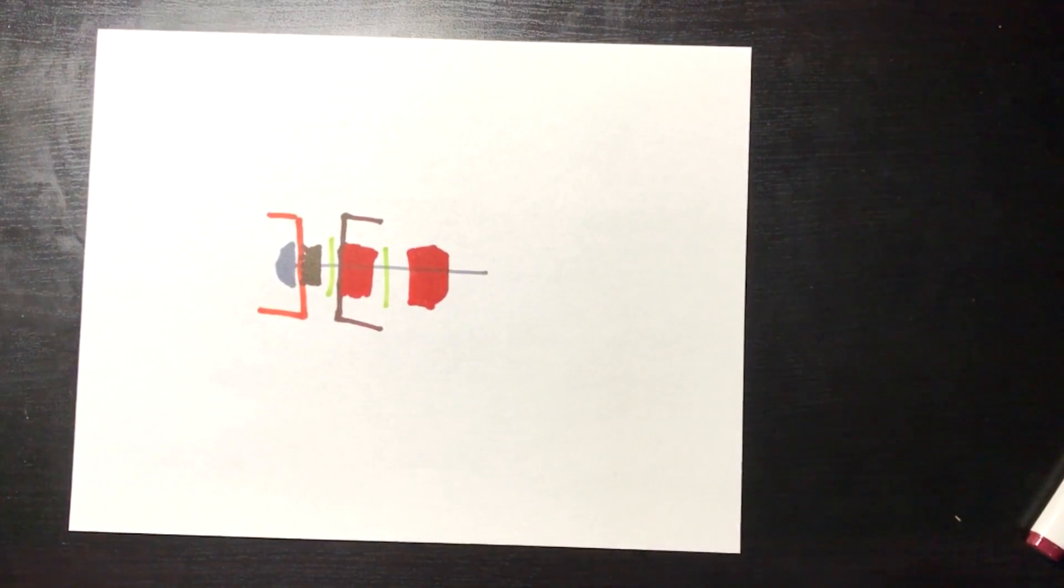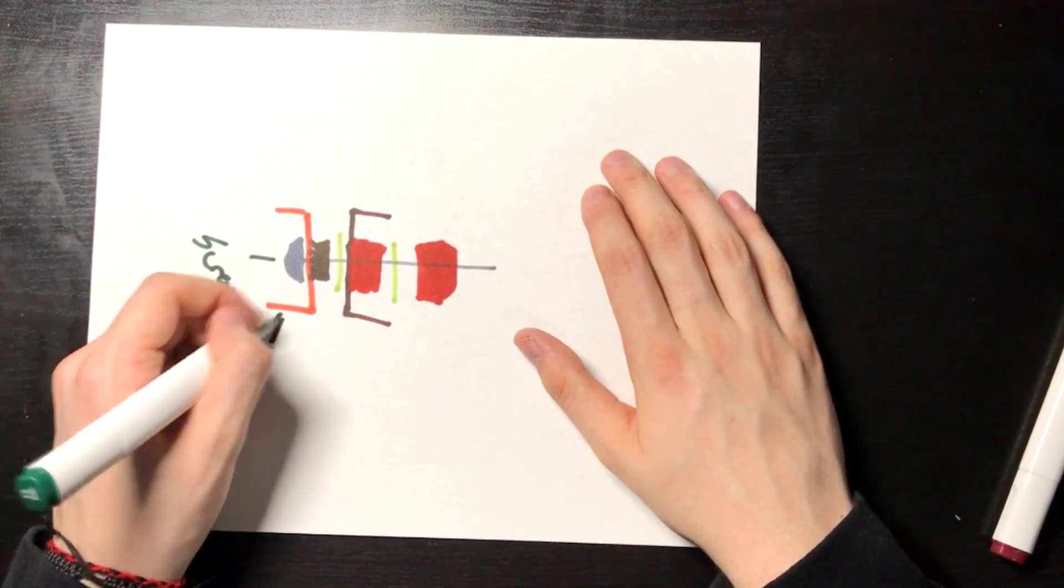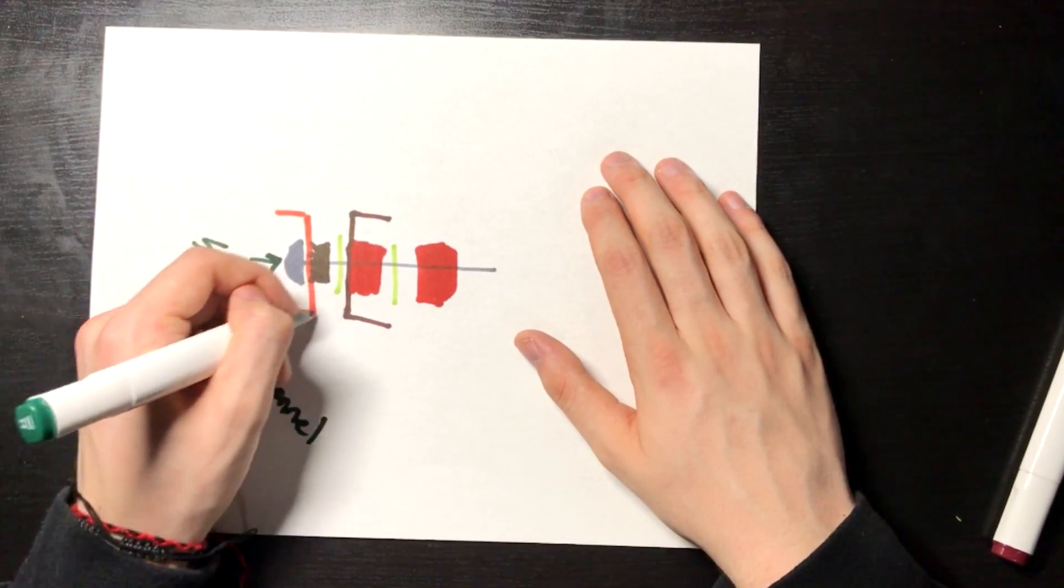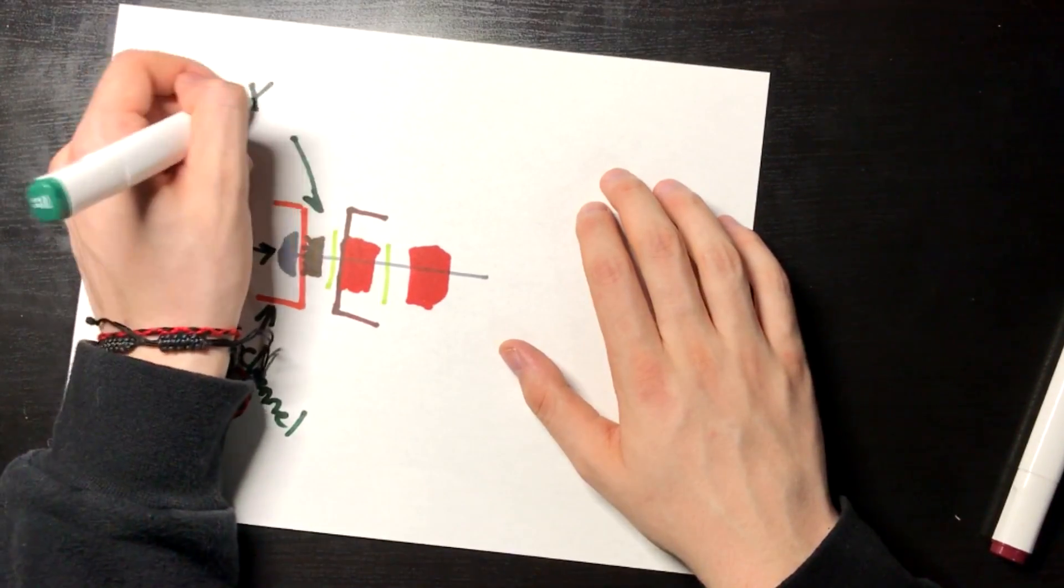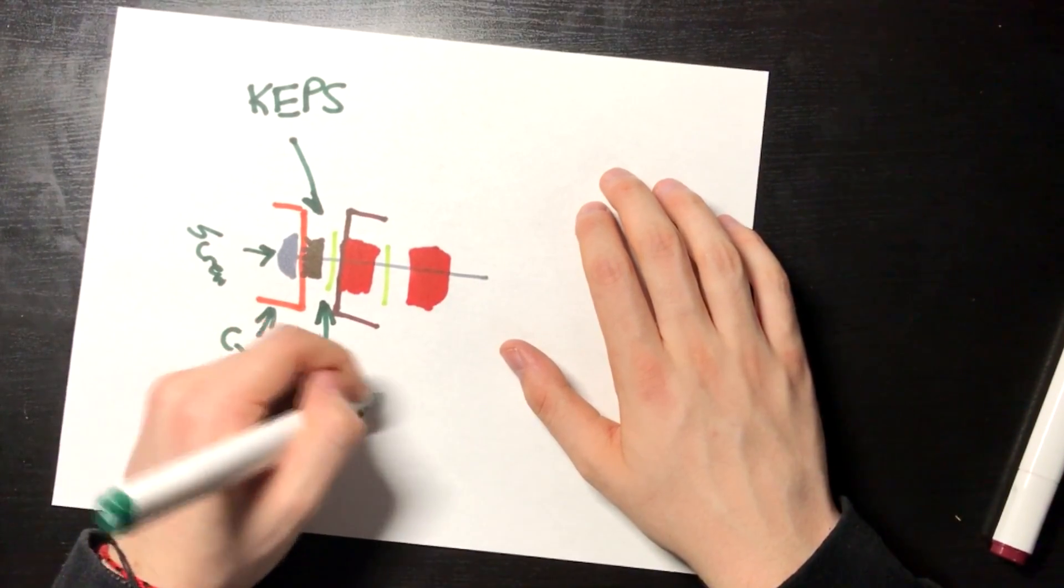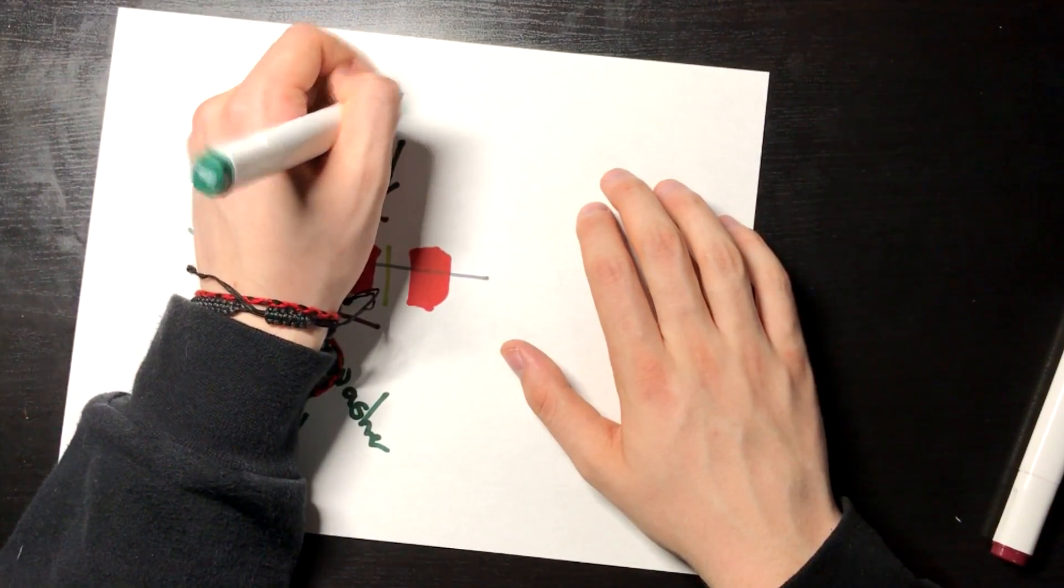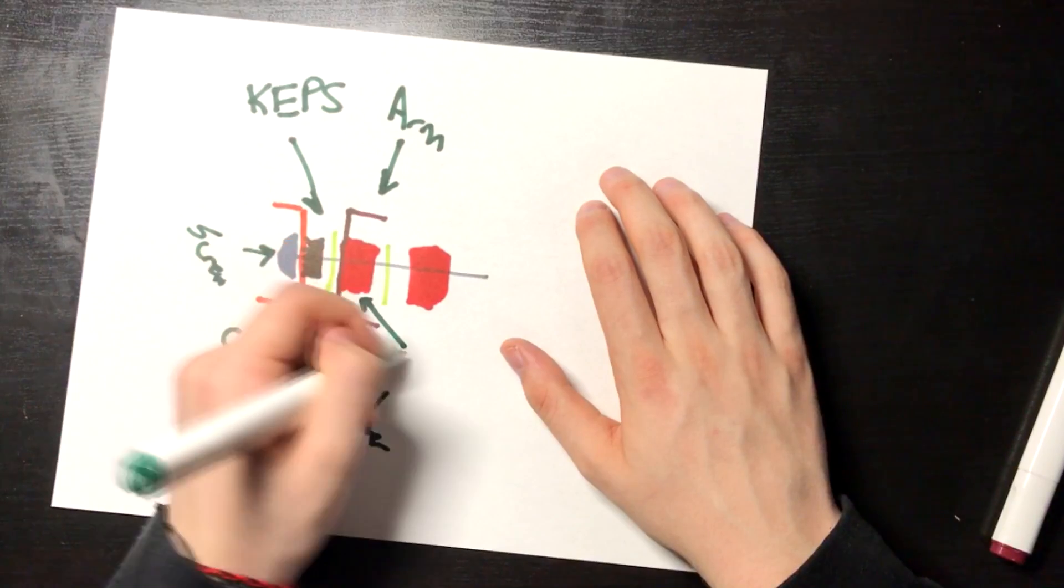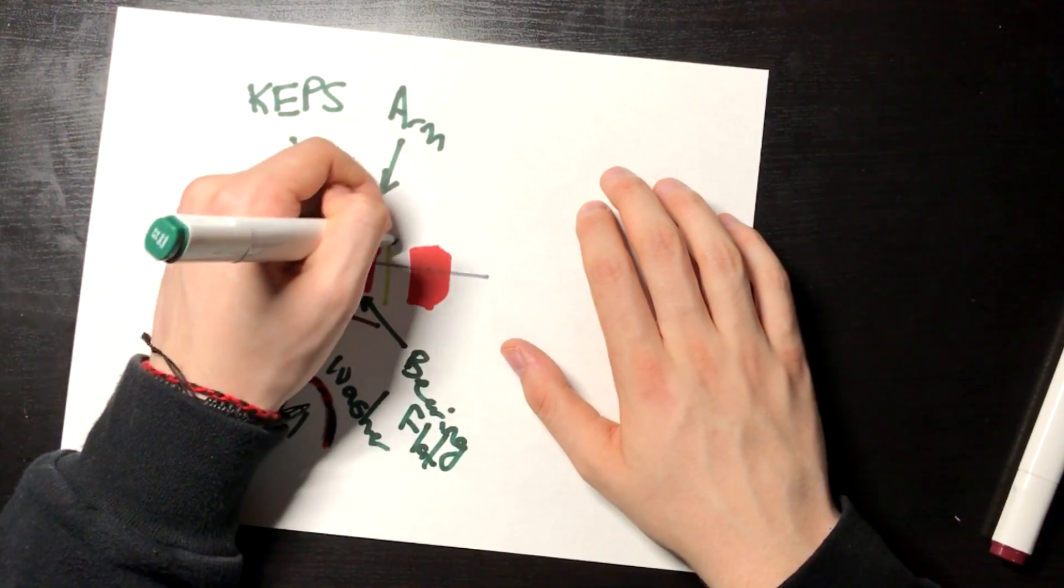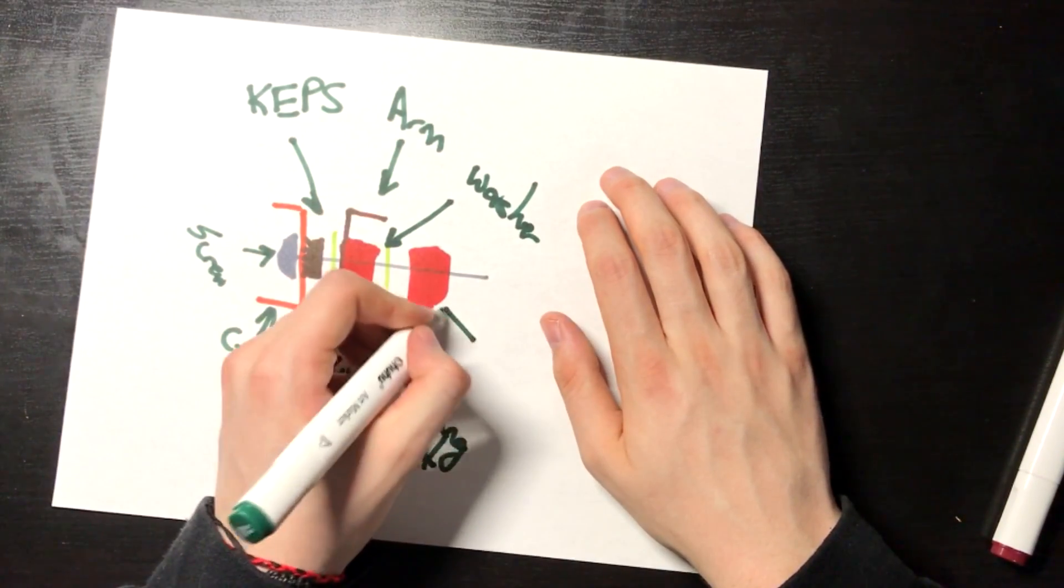The bearing flat's about that much. We will have a second washer, and then we will have a nylock. So let me label this: this is a screw, C-channel, caps, we have the washer, the arm, bearing flat, we have the washer, and we have the nylock.